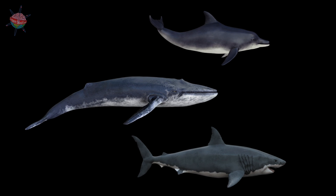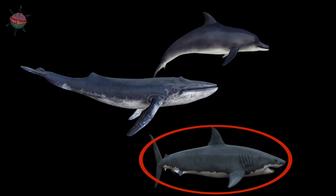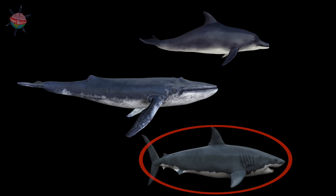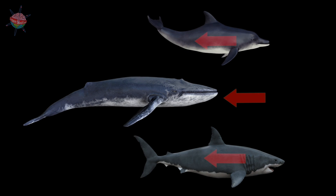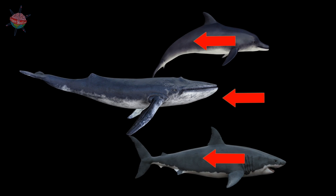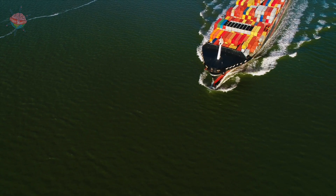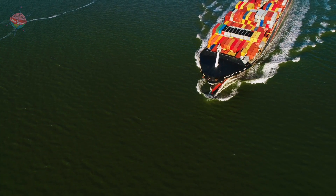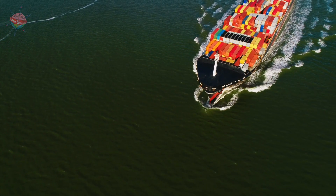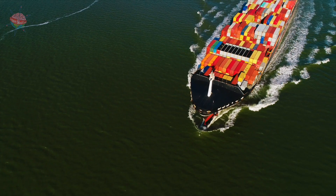Think about the shape of a dolphin, whale or shark. These sorts of shapes are ideal for reducing water resistance. This is why ships are long and thin with tapered ends, rather than being bulky and square.